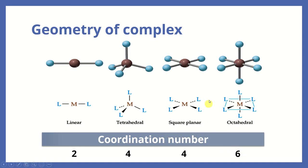If the coordination number of the metal ion is 6, the geometry or shape of the complex will be octahedral. So in this chapter, when asked about the geometry of a complex, please answer with one of these four names only, depending on coordination number: CN=2 gives linear, CN=4 gives tetrahedral or square planar, and CN=6 gives octahedral.